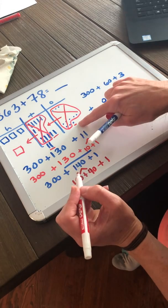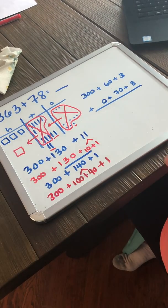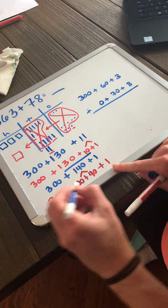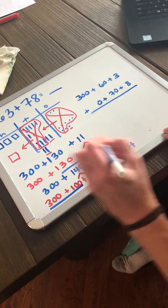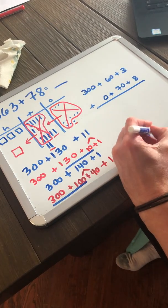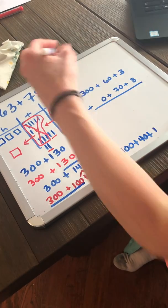But now let's combine our like values. We've got 300 and 100. So we've got 300 plus 100. 300 plus 100 gives us 400. We've got 1, 2, 3, 4 10s, which is worth 40. And we have one 1. So we get the sum of 441.